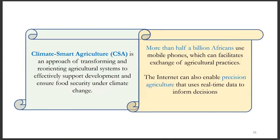Climate-smart agriculture is an approach of transforming and reorienting agricultural systems to effectively support development and ensure food security under climate change. It is aided by rapid expansion of access to digital technologies. More than half a billion Africans use mobile phones, which can facilitate exchange of knowledge about agricultural practices. The internet can also enable precision agriculture that uses real-time data to inform decisions.